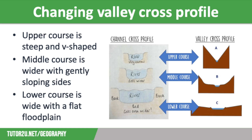So why does the valley cross profile change as you move downstream? In the upper course, the valley has steep sides, which are V-shaped, caused by vertical erosion. But because the slopes are so steep, there is a lot of weathered material that falls down the slopes and gathers on the valley floor before being removed by the river. Rock tends to be much harder and therefore resistant in the upper course, so less lateral erosion takes place, keeping the valley narrow with steep sides.